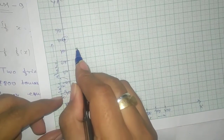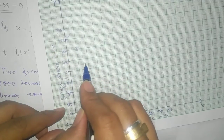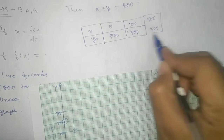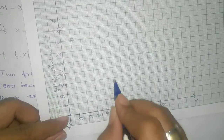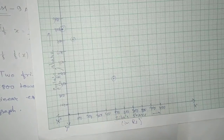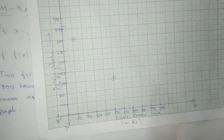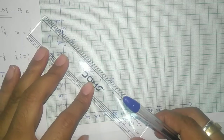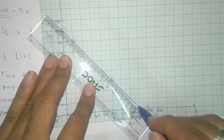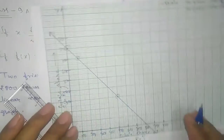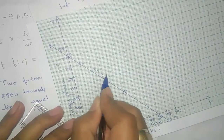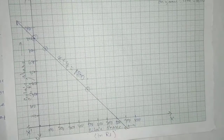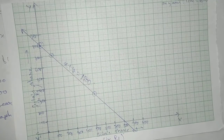For the point x equals 500, y equals 300 — plot that point as well. Now use a ruler to join the points and extend the line beyond the plotted points, with an arrow at each end. On the line, write the equation: x plus y equals 800. This is your graph for the equation. Remember to always use pencil and ruler when drawing graphs.